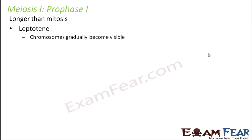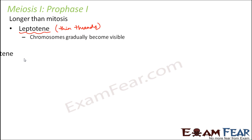The first stage is leptotene. The term leptotene is derived from leptonema, which means thin threads. Here the chromosomes gradually become visible because before this, the chromosomes did not exist as such — they were all thread-like chromatin threads which were hardly visible. So here the individual chromosomes start condensing and become compact, though they are so close to each other that they are almost indistinguishable. In this stage, the nuclear envelope and nucleoli also disappear, and the centrioles migrate to opposite poles. These are common events which happen in any prophase.